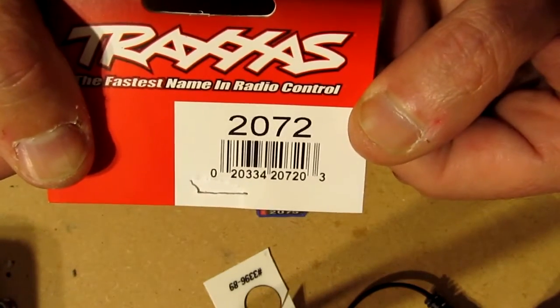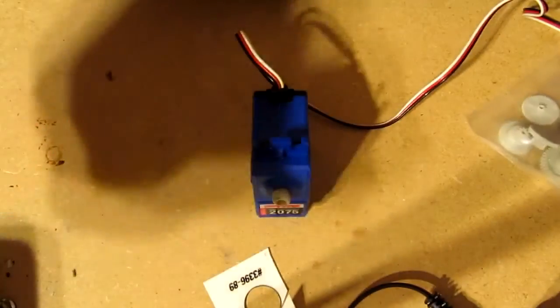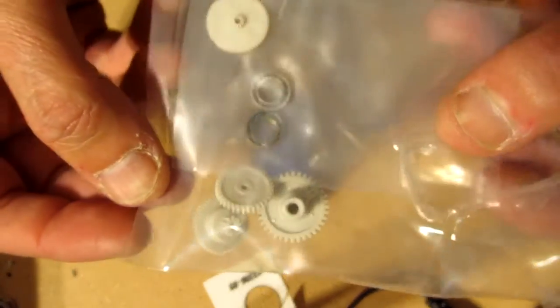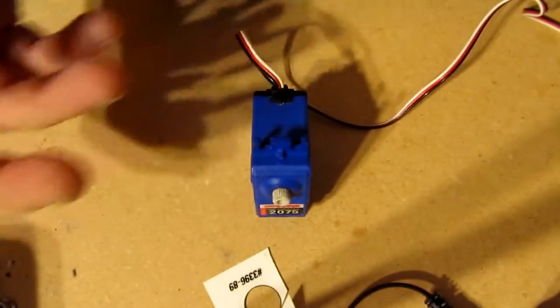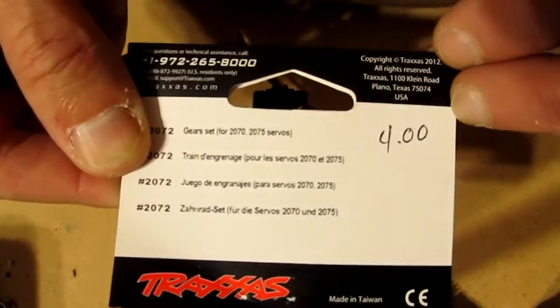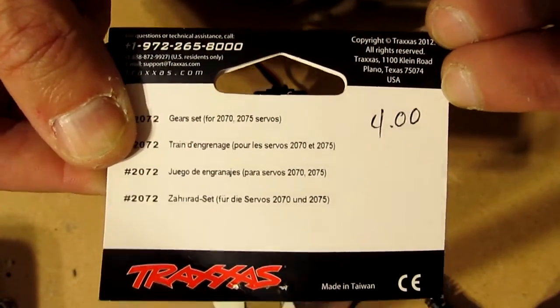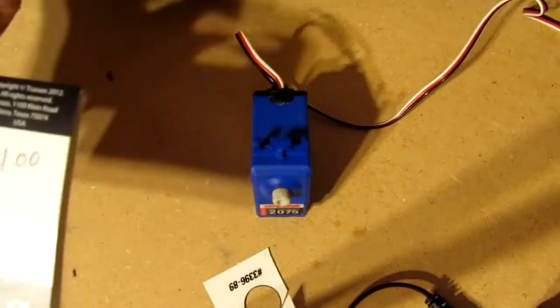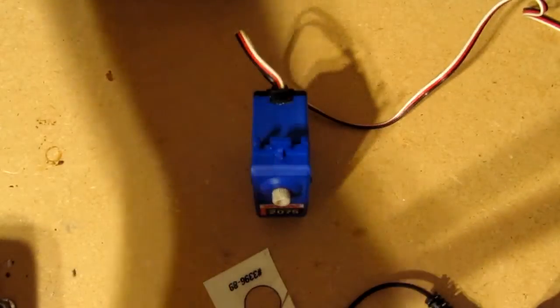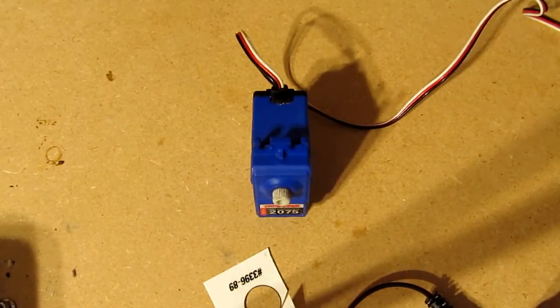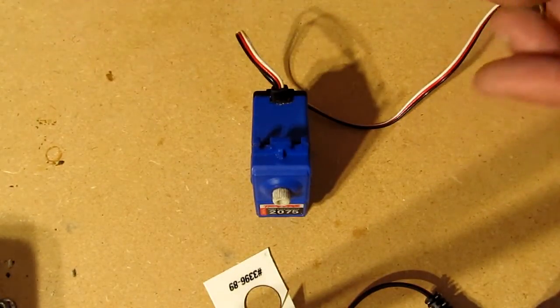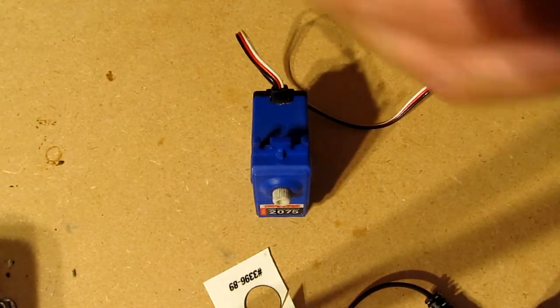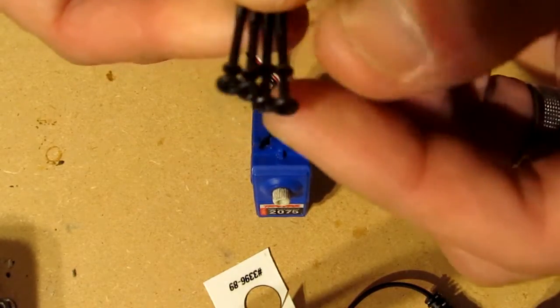Just a little part number 2072 from Traxxas, replacement gears and bearings. Okay, here's the fun side: four bucks. So if you just have a damaged gear, four bucks, new servo. If the motor is gone, different story, you get another servo. But if you verify that it's definitely your gears, four bucks, you got a brand new servo.